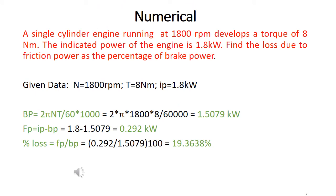Let's solve a simple numerical. The given data is a single cylinder, so K equals 1, running at N equal to 1800 RPM and it develops a torque. So torque is 8 Nm and the indicated power is given as 1.8 kW. So he has told us to find out the frictional power and the loss due to the frictional power as a percentage of brake power. Okay, so we all know BP equals 2 pi NT by 60,000. So N equals 1800 into torque, torque is given as 8. Okay, so directly substitution we have substituted. So we will be getting 1.5079 kW. So FP equals IP minus BP. So we will be getting it as 0.292 kW. So percentage of loss is FP by BP. So we will be getting it as 19.3638%.